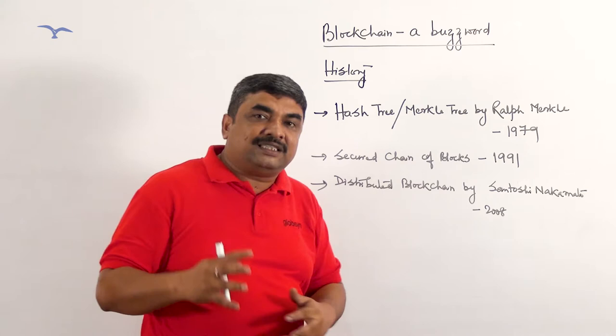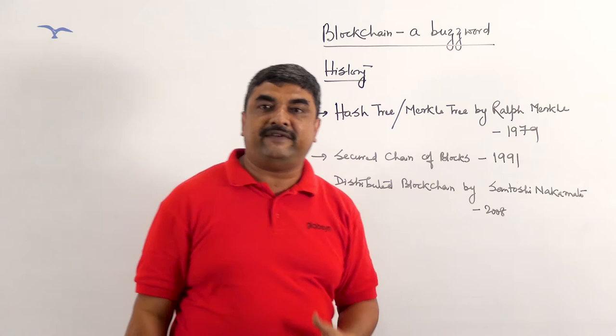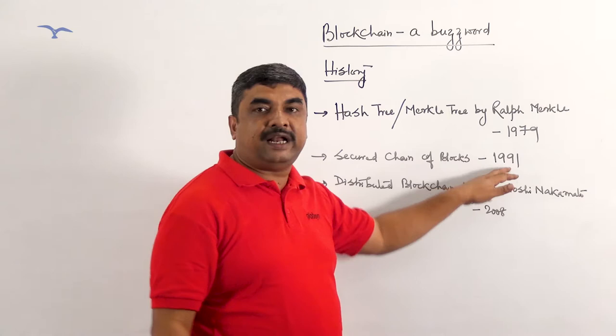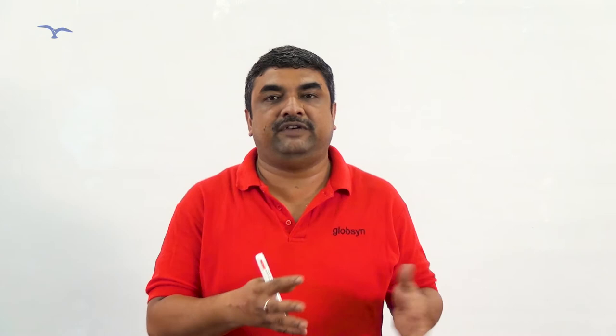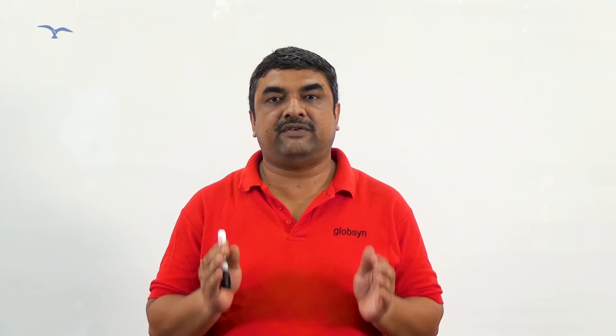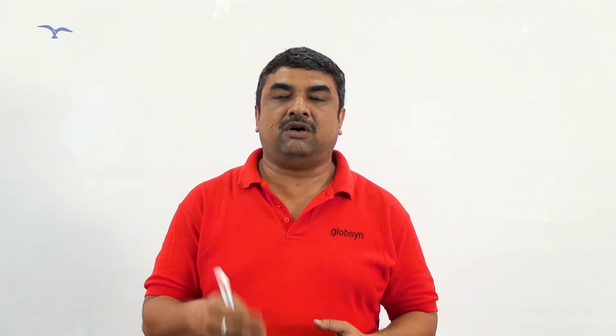So, if I summarize the origin of blockchain: it started in the year 1979, followed by in 1991, it evolved as a secured chain of blocks, and finally in 2008, it was confirmed as a distributed blockchain. I hope you have gathered some information on blockchain through this video. In my next video session, I will be discussing about the blockchain transaction cycle. Please leave your comments below if you want to hear on any specific topic. Thank you.